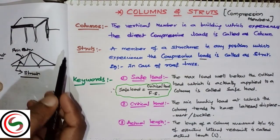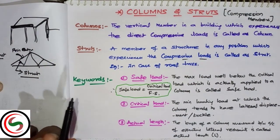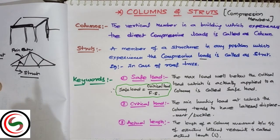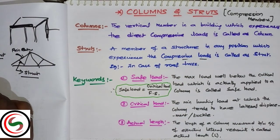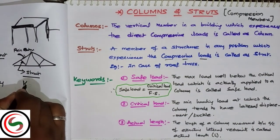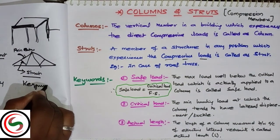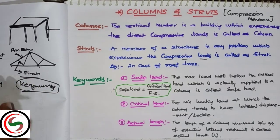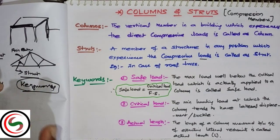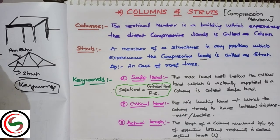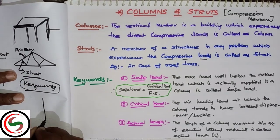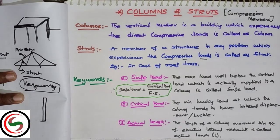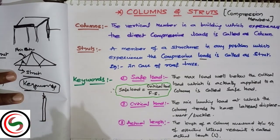Both columns and struts will be taking compressive loads only. Because they are taking compressive loads, these are considered as compression members. So in each chapter there are some keywords that are very important.